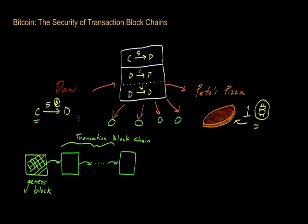They check whether or not Dan has tried to spend those Bitcoins previously, and so on and so forth. And these Bitcoin miners are all collectively trying to take all these recent transactions that haven't yet been recorded.